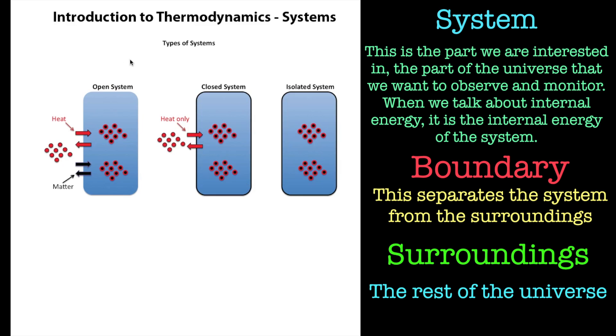So these are three types of systems. We've got an open system here, a closed system and an isolated system. So we look at each one individually.